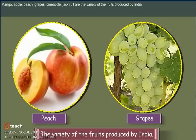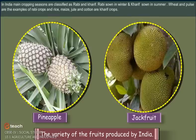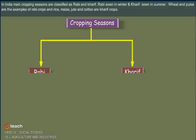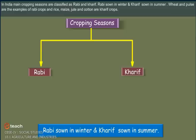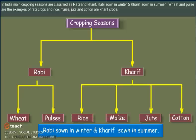Mango, apple, peach, grapes, pineapple, and jackfruit are among the variety of fruits produced in India. In India, main cropping seasons are classified as Rabi and Kharif. Rabi crops are sown in winter and Kharif crops are sown in summer. Wheat and pulses are examples of Rabi crops, and rice, maize, jute, and cotton are Kharif crops.